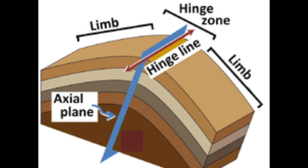The third part is the hinge line. The hinge line is formed by connecting or joining all the hinges of rock beds. As each rock bed has its own hinge, when all the hinges combine and connect, they form the hinge line.